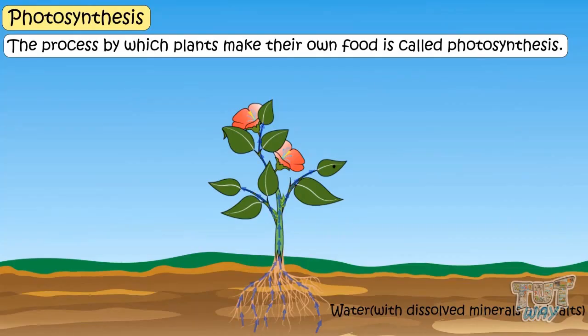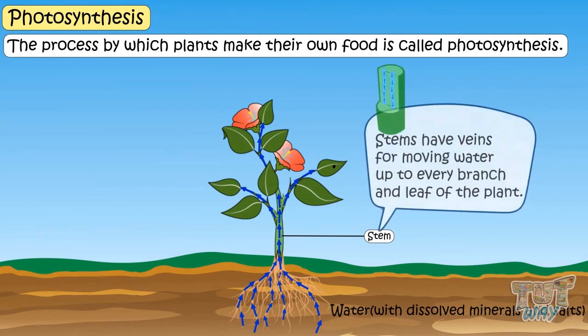This water with dissolved minerals and salts moves up to the stem. The stem has veins for moving water up the plant, to every branch and leaf of the plant.